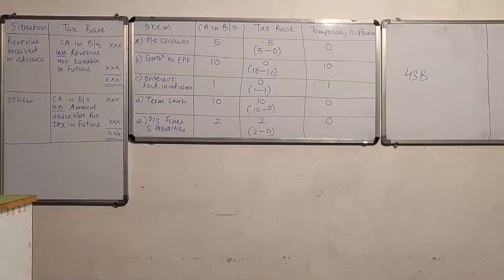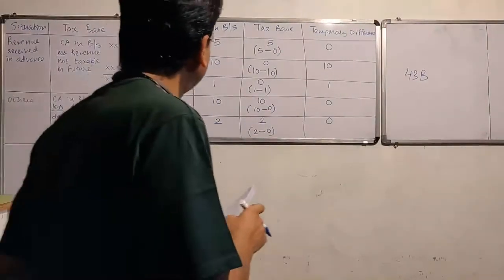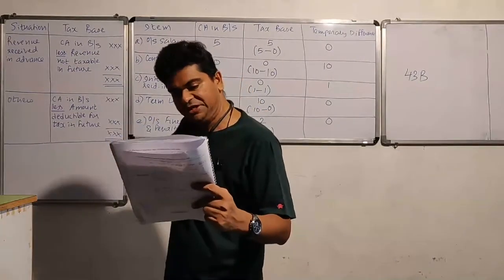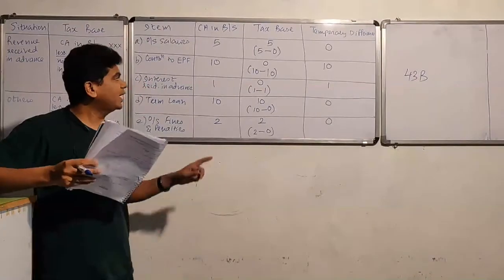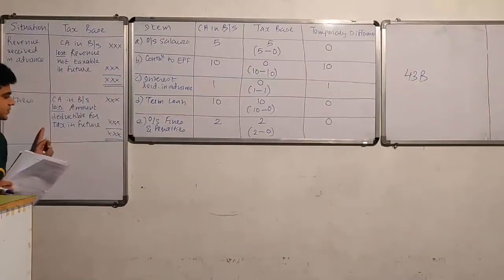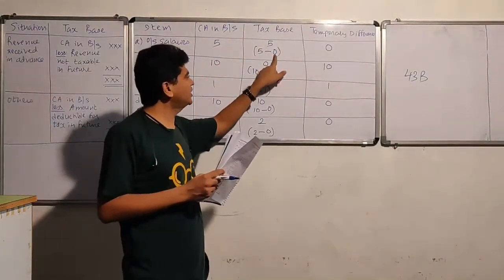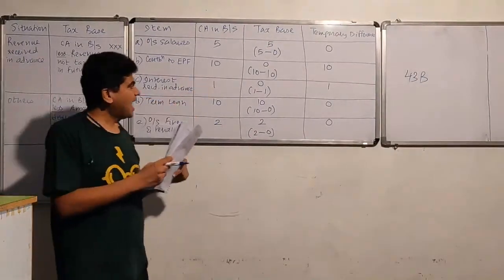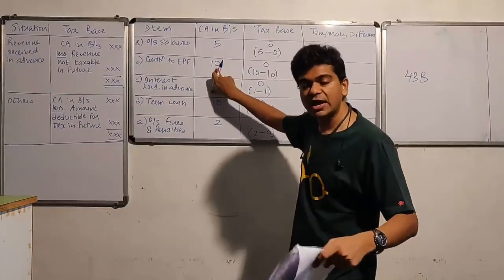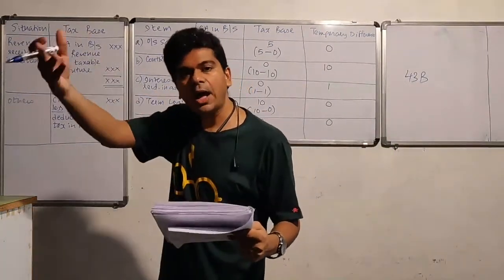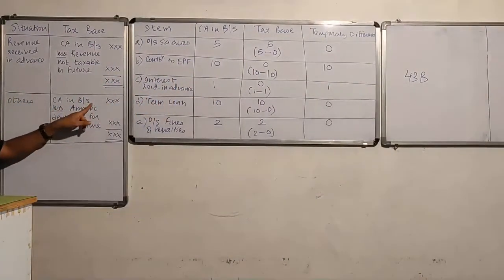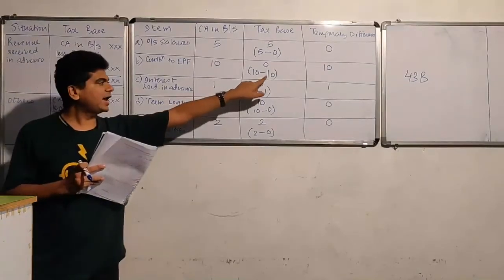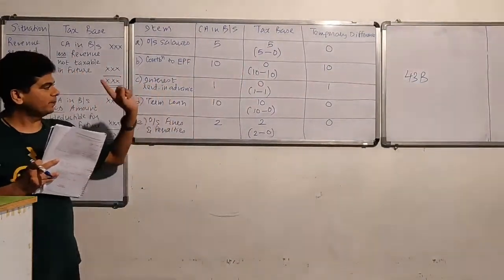To recap Question 3: Outstanding salaries — already deducted for tax, so amount deductible in future is zero, tax base is five. Contribution to PF — on accrual basis but deduction available when paid in cash in a future assessment year, so entire ten lakhs is deductible in future, giving a tax base of zero. This is the odd one out — it falls in the other category but still gives a tax base of zero.